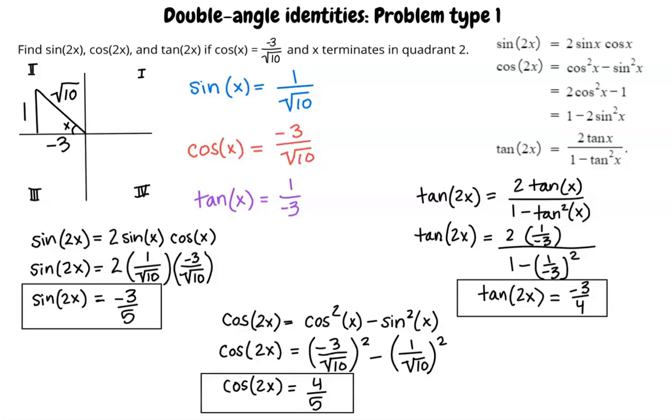So, the overall process for solving these problems is to first sketch the given angle in standard position in a coordinate plane, draw a perpendicular to the x-axis to form a right triangle, and find the lengths of the side that was not given. Then, find sine of x, cosine of x, and tangent of x for the triangle. And last, substitute those values into the double angle formulas.